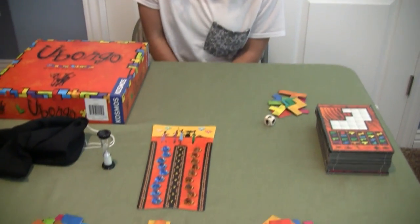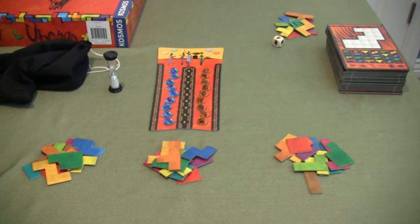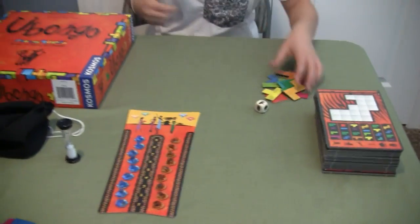Looks like you got a lot of puzzly stuff here. Looks like some Tetris piece type shapes. Cool. Alright, well, what's the objective of Ubongo?